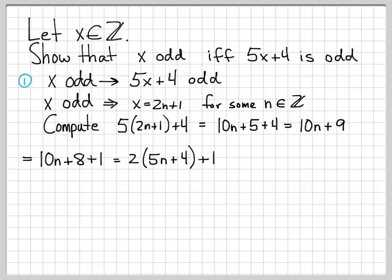Now this has the form of an odd number. We have 2 times some integer, let's call it k, plus 1, k in Z. We can write the quantity 5x plus 4 as 2k plus 1. This is the general form of an odd number. We have shown that 5x plus 4 is odd. We started off assuming x is odd, did a simple computation, and showed that 5x plus 4 also has the form of an odd number.